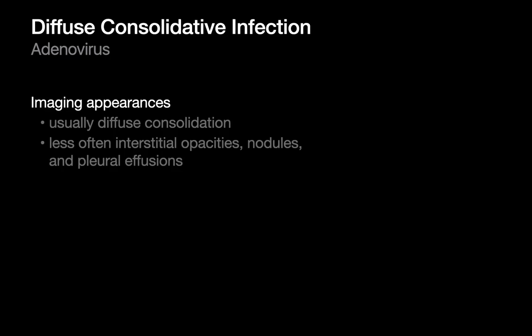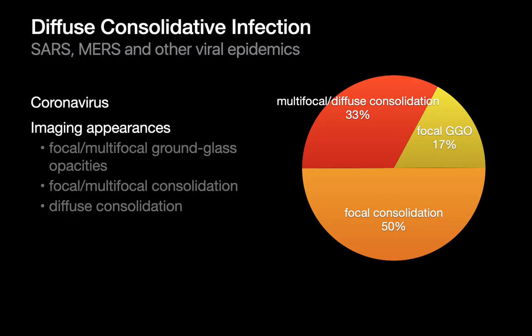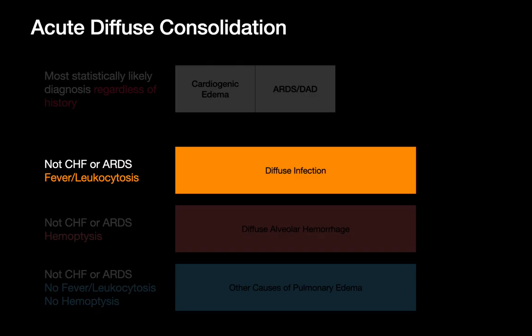Adenovirus is another cause of diffuse consolidation in immunocompetent individuals — here's a nice example. Viral pandemics and epidemics can on occasion result in diffuse consolidation, but as with influenza, more likely to present with no lung finding or if there is a finding, more often non-diffuse. But they can present diffusely. Here's an example of SARS. That's the relatively short differential diagnosis list if you're entertaining diffuse infection as the cause, rather than just CHF or ARDS.